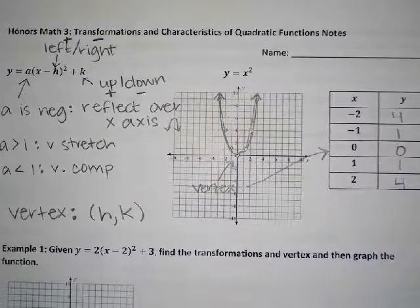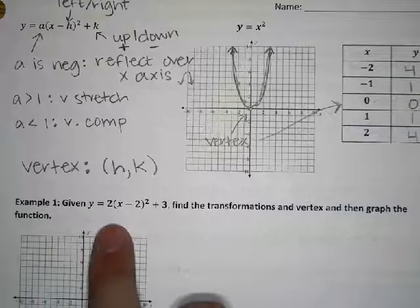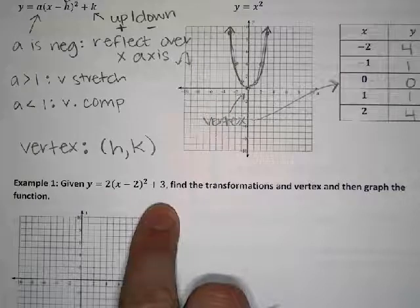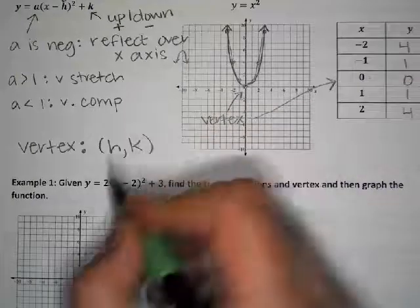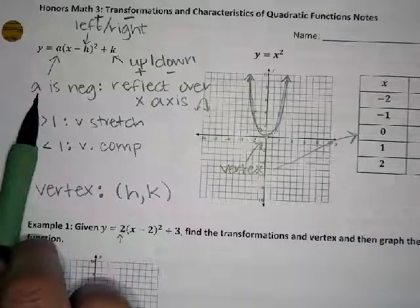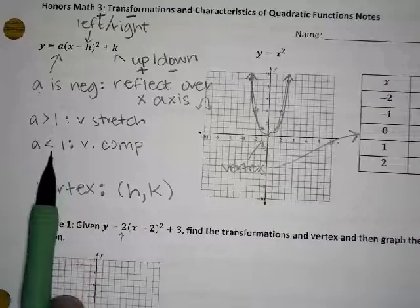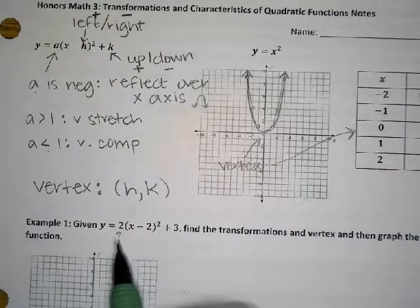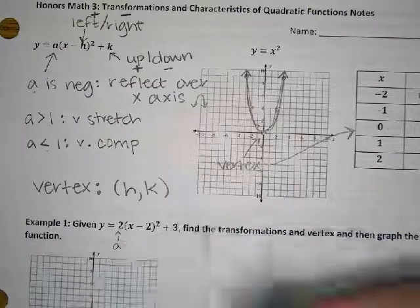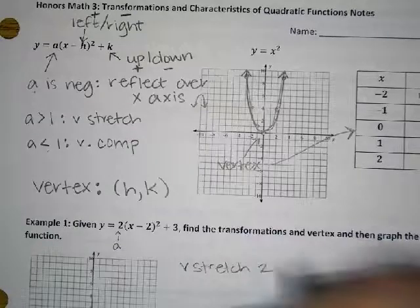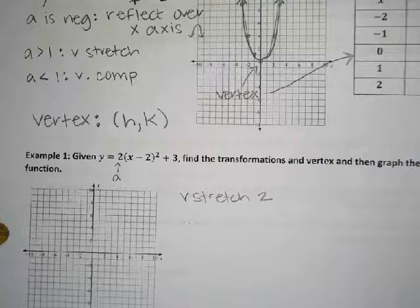In the first example problem, we have a quadratic with a bunch of numbers. We have a 2 in the front — the 'a' value. Is 2 negative? No, so it has not been reflected over the x-axis. Is 2 bigger than 1? Yes, so the 2 is a vertical stretch of 2. This graph is going to be twice as tall as the normal graph.